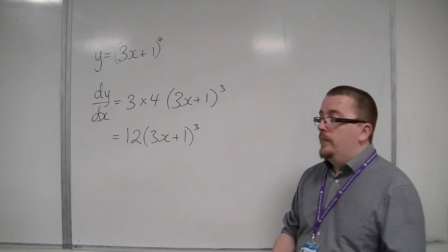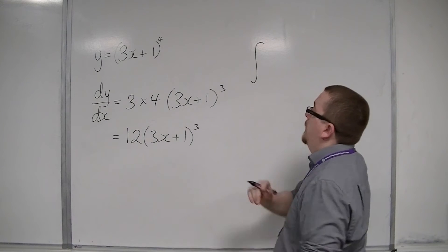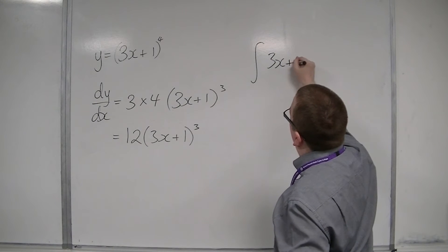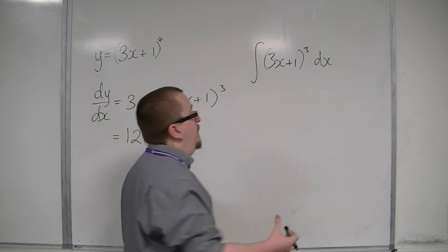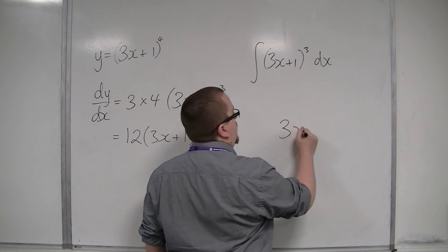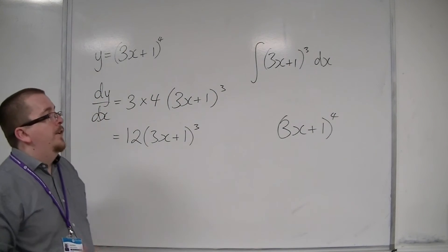So it may well be that we could use this knowledge in order to integrate certain functions. If I was going to integrate something like 3x plus 1 cubed, then what I would want to think about is that 3x plus 1 cubed will integrate to something that looks like 3x plus 1 to the 4. It's just there's going to be this number out the front that I don't yet know.